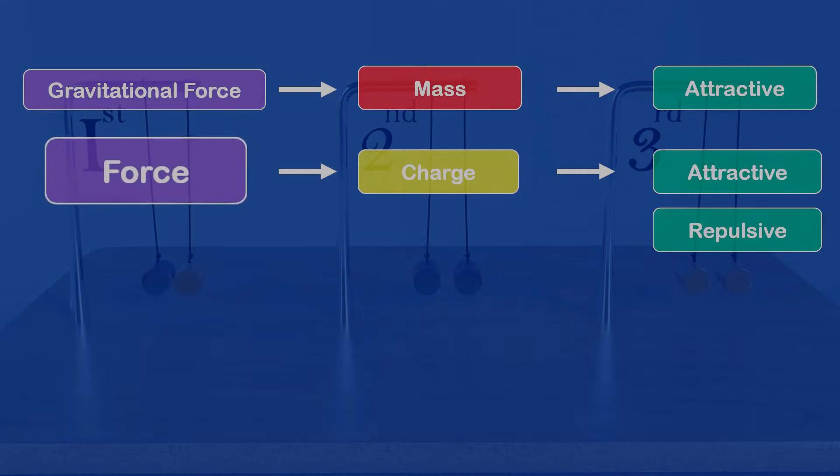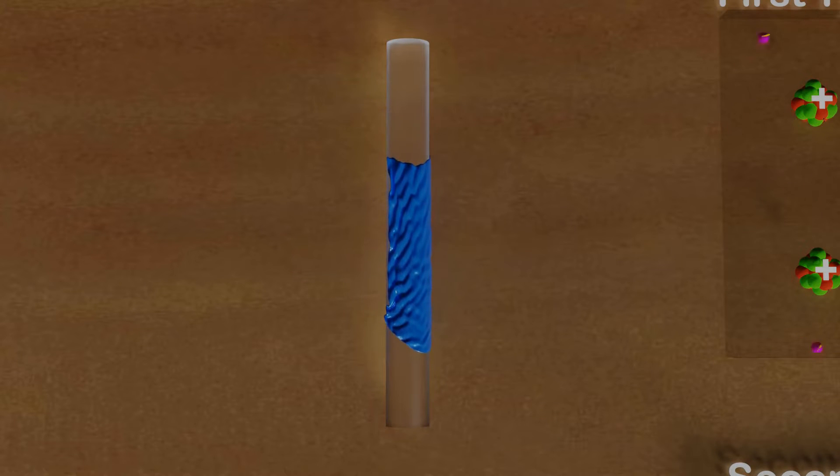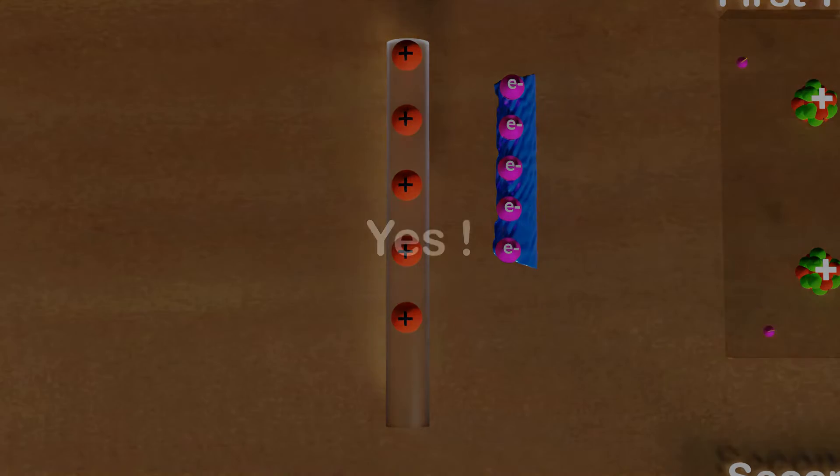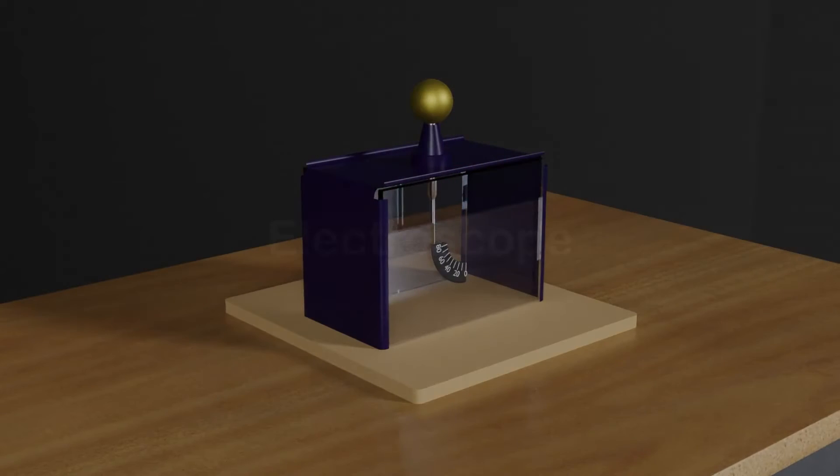And now we know that when we rub an object, it becomes charged. But the question arises, is there a device that can tell us whether a body is charged or not? Yes, there is such a device and we know it by the name of electroscope.